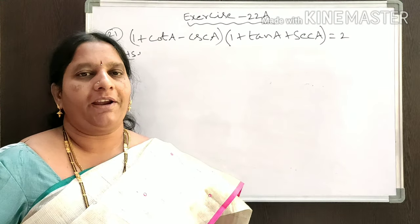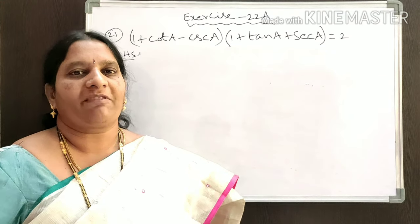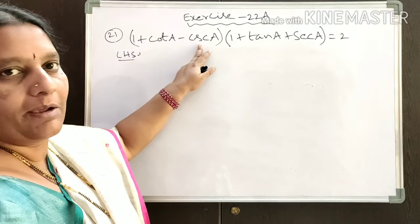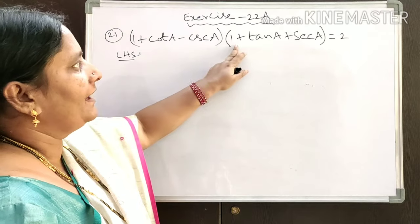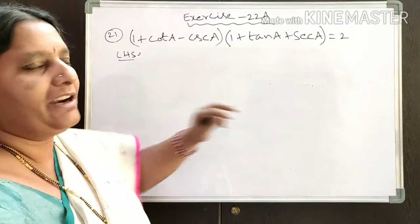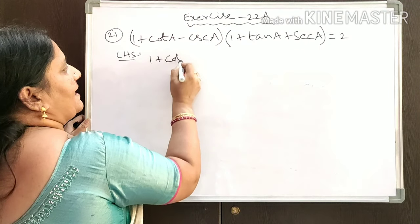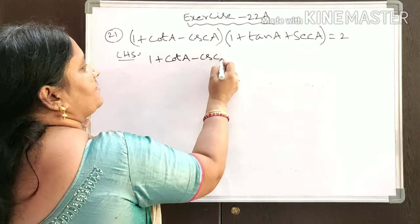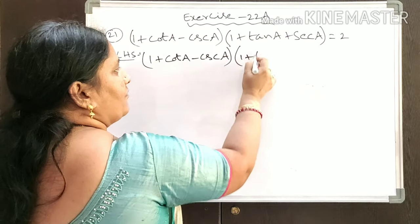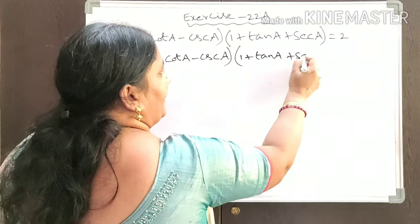Our topic is trigonometry, exercise 22A, problem 21. The question is: (1 + cotA - cosecA) into (1 + tanA + secA), show that it is equal to 2. We are proving the product of these two expressions is equal to 2.